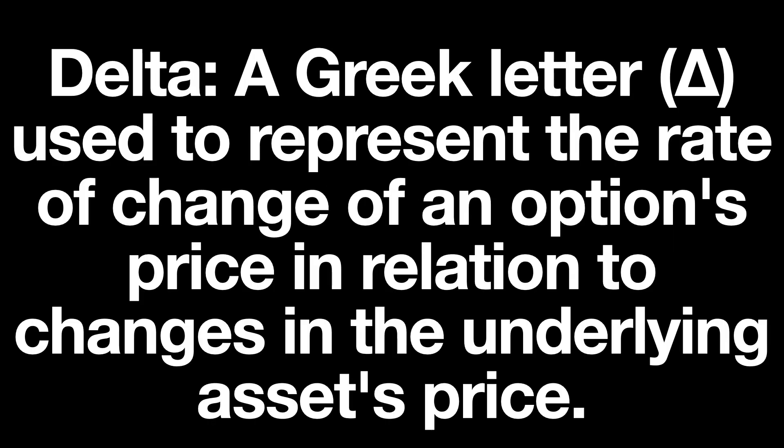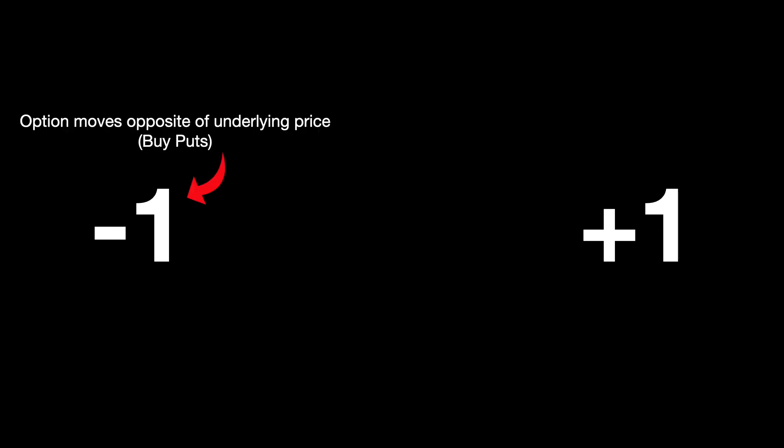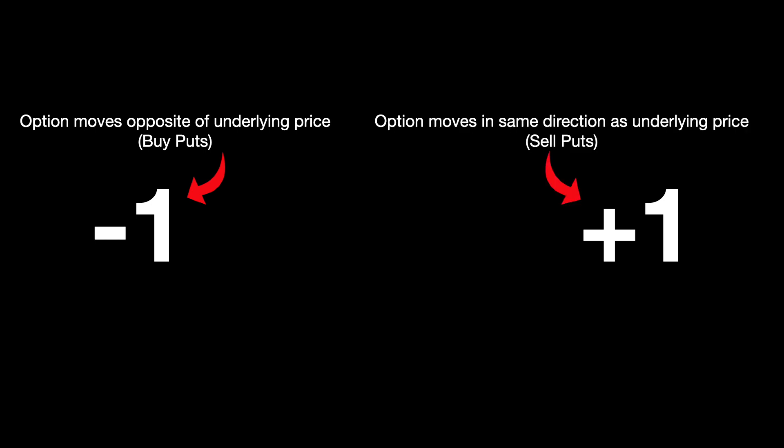What is Delta? Delta is a Greek letter used to represent the rate of change of an option's price in relation to changes in the underlying asset's price. Essentially, Delta measures the sensitivity of an option's price to changes in the price of the underlying asset. Delta values can range from negative 1 to positive 1. A Delta of negative 1 means the option's price will move in the opposite direction of the underlying asset's price, while a Delta of positive 1 means it will move in the same direction.